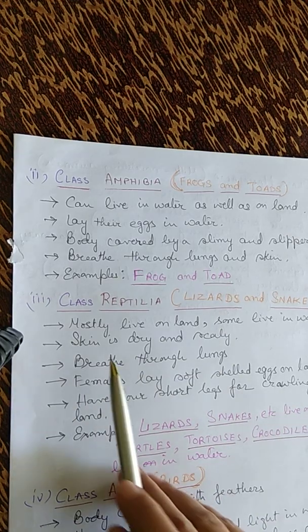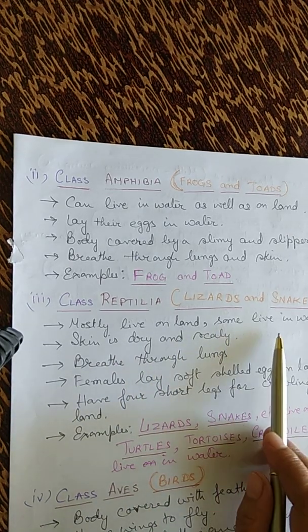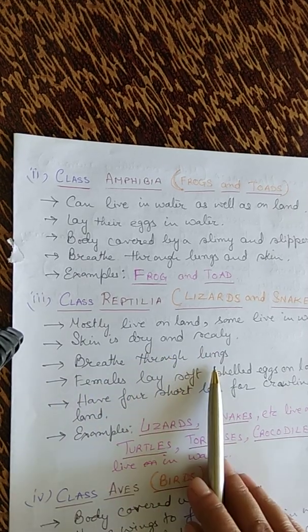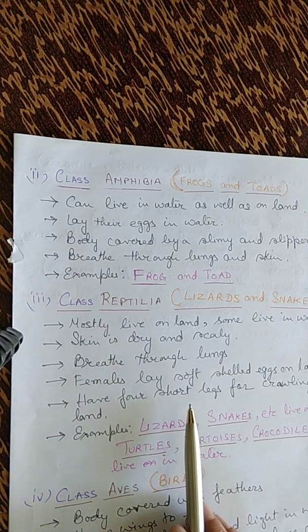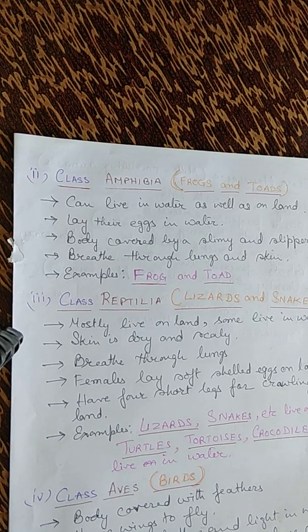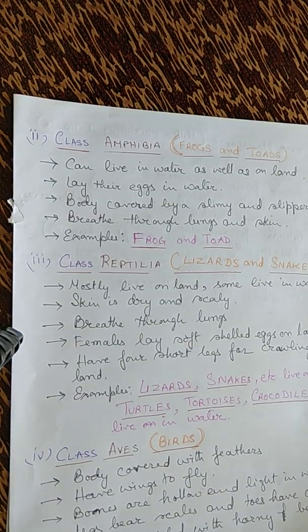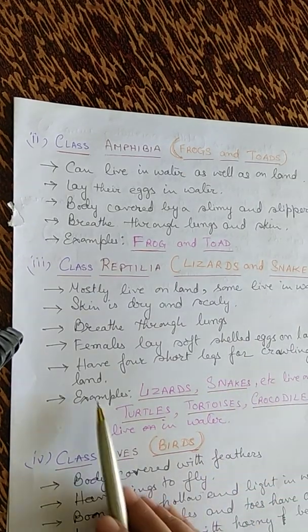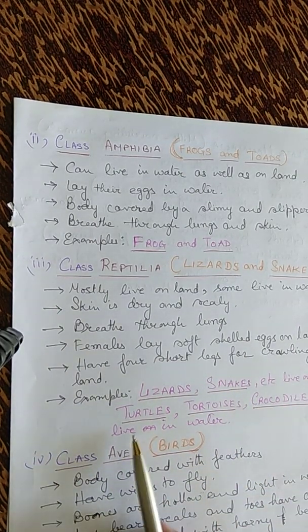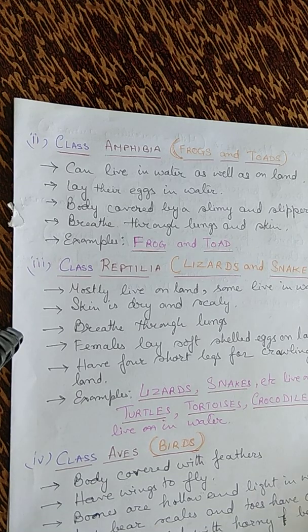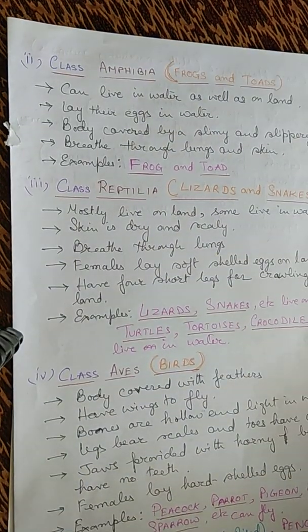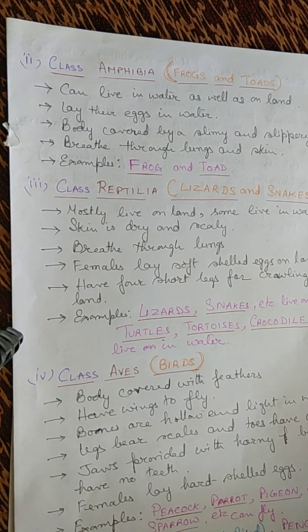Class Reptilia includes generally lizards and snakes. They mostly live on land, though some live in water too. Their skin is dry and scaly, they breathe through lungs, and the females lay soft-shelled eggs on land. They have four short legs for crawling. Examples: lizards, snakes on land; turtles, tortoises, and crocodiles in water.